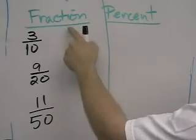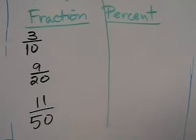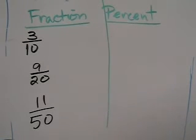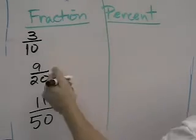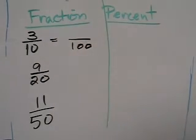Whenever you're changing a fraction into a percent, if you can, try and make the denominator 100, because a percent always means per 100. In this case, 3 tenths, it's very easy for me to change it into a denominator of 100.